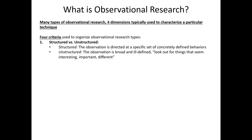First, observational research comes in structured and unstructured format. When it's structured, the observation we intend to look at is clearly defined. For example, perhaps we're interested in the number of products that a consumer touches while shopping in a retail store. On the other hand, a lot of observational research is unstructured — we don't set any particular rules of what we're looking for. Instead, we're merely looking out for consumer behaviors that seem interesting, important, or different than our expectations. This tends to be associated with exploratory research designs.